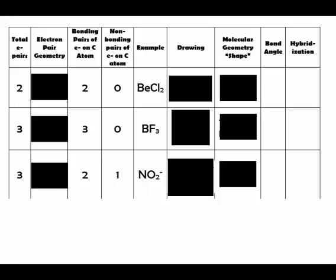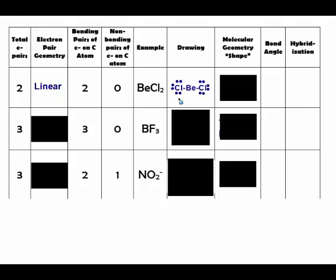When you have two pairs of electrons on the central atom — two bonding pairs and no lone pairs — such as beryllium chloride, the chlorines will be as far away from each other as possible, giving it a linear shape. The shape will also be linear because there are no lone pairs. When there are no lone pairs on the central atom, the electron pair geometry and molecular geometry will be the same. The bond angle for a linear format is 180 degrees.